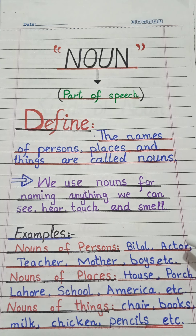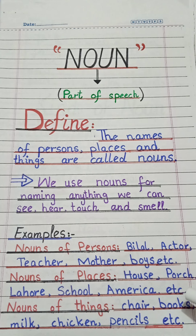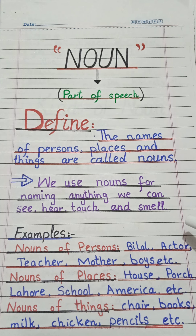Here are examples of nouns: nouns of persons — Bilal, actor, teacher, mother, boys. Nouns of places — house, Lahore, school, America. Nouns of things — books, milk, chicken, pencil. Why do we have to learn noun? Because without noun you can't write in English. Without vocabulary you can't write English sentences.